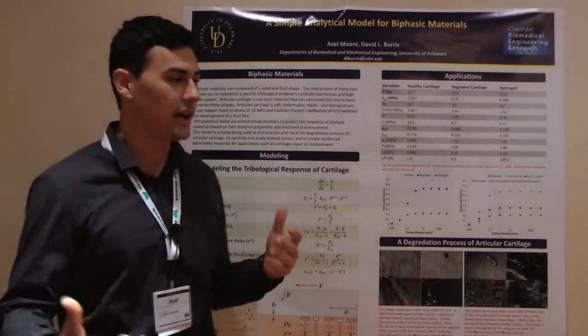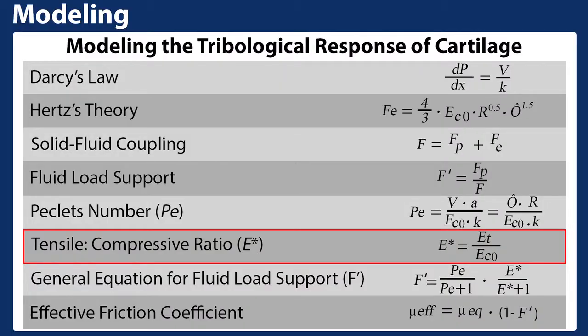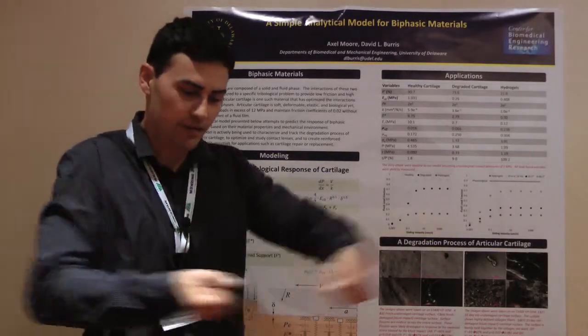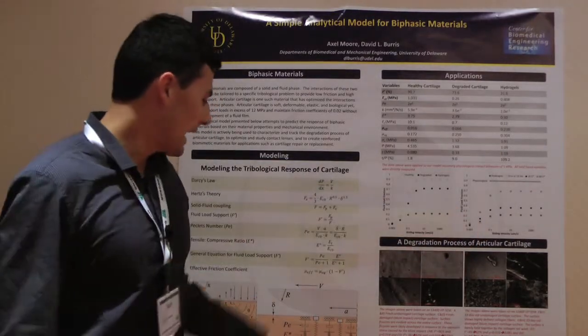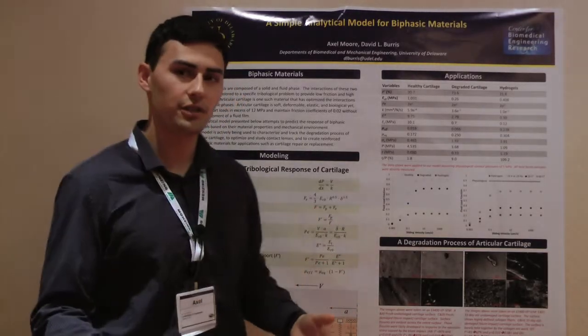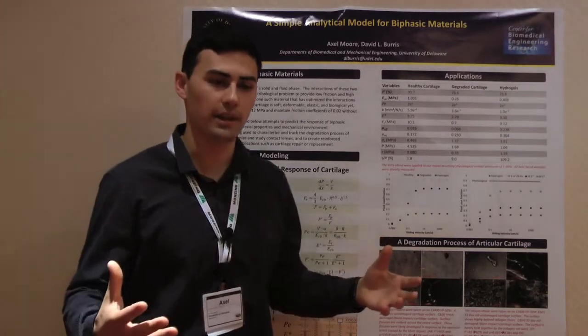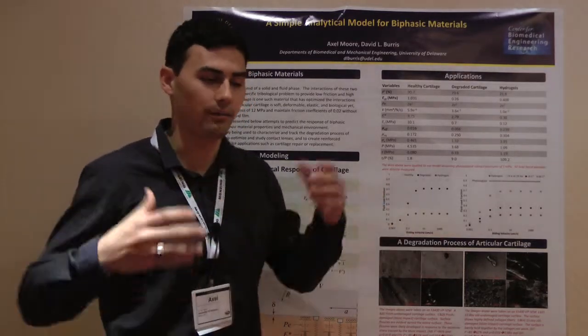The parameter we need to design to — and the parameter that fails in osteoarthritic joints — is E*, the tensile-to-compressive modulus ratio: simply pulling on the cartilage matrix in tension versus compression. In healthy cartilage, E* is about 9.75; in degraded cartilage, it drops to about 2.79. Hydrogels are at only 0.3 — severely below what's needed. This is the material property we want to design hydrogels toward, and it's the loss of this tensile property — no longer maintaining a large tensile-to-compressive modulus ratio — that causes cartilage to fail.